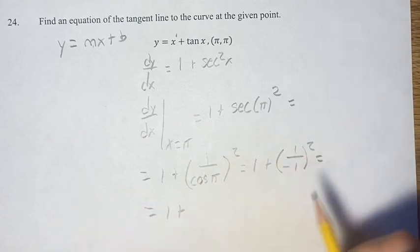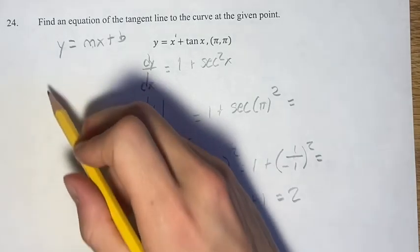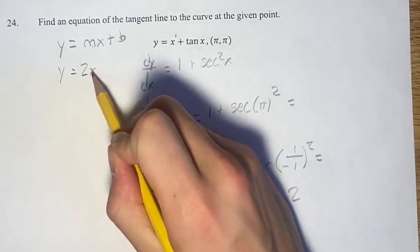1 plus 1 divided by negative 1 is negative 1 squared. 1 plus 1 is 2. So, y is equal to 2x plus b.